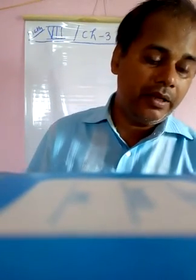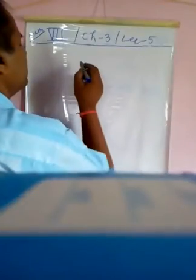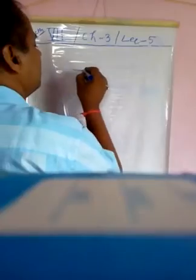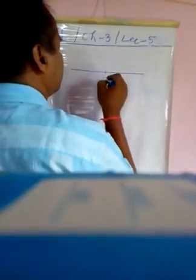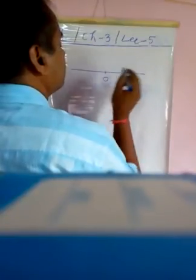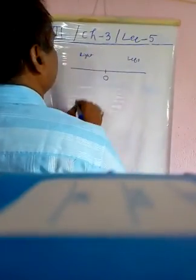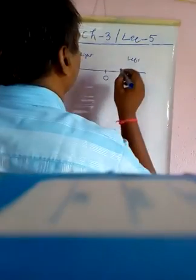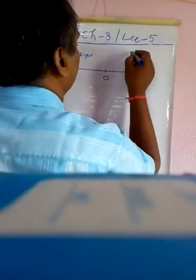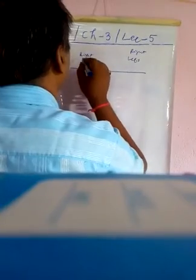How to compare rational numbers? This is the number line. This is the left-hand side and this is the right side. Sorry — this is the right side and this is the left side.